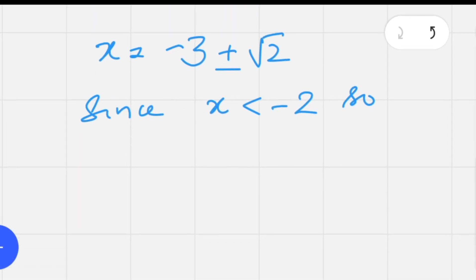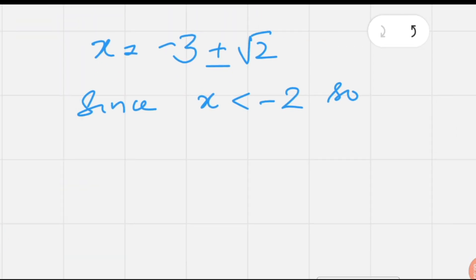But for the restricted value x < -2, we have to consider only x = -3 - √2.